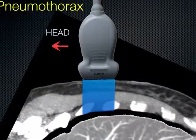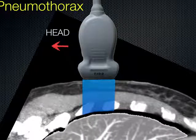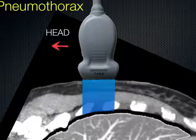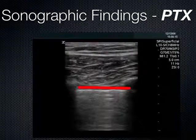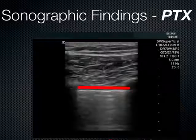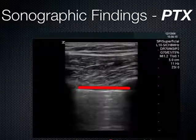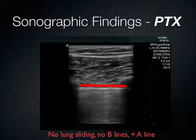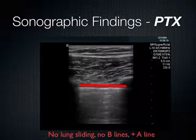In pneumothorax, the probe is oriented towards the head. If the lung falls away from the chest wall, there is a pocket of air between the probe and the lung, and we will not see sliding because the parietal and visceral pleura are no longer together. Instead we see no sliding at this interface, no B lines, and we do have an A line because this is air. A lines can be seen in either aerated lungs or in pneumothorax — it doesn't tell you where the air is, only that air is present.